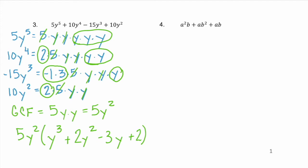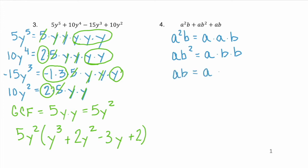Now let's look at example 4. Here we have three terms and two variables, a and b. The first term is a squared b, which factors to a times a times b. The second term is ab squared, which factors to a times b times b. And the last term is ab, which is just a times b. So, what do all three of these terms have in common? What is our GCF?